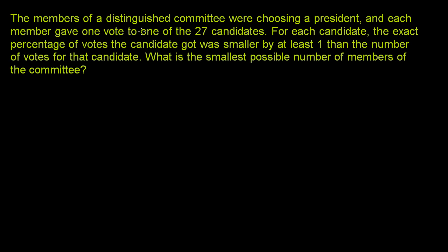The members of a distinguished committee were choosing a president. Each member gave one vote to one of the 27 candidates, and it looks like they all got at least one vote.